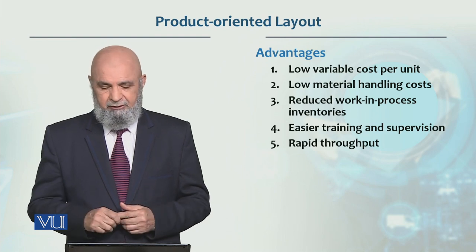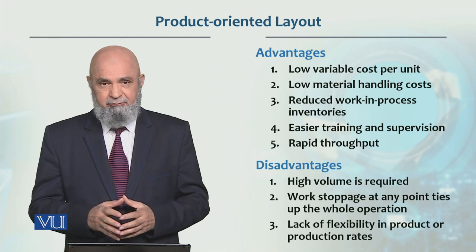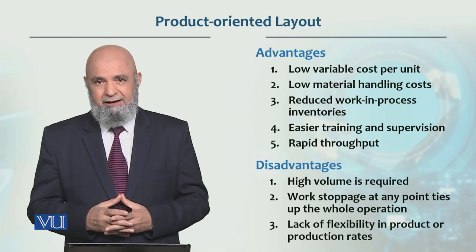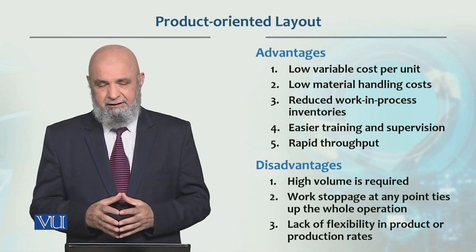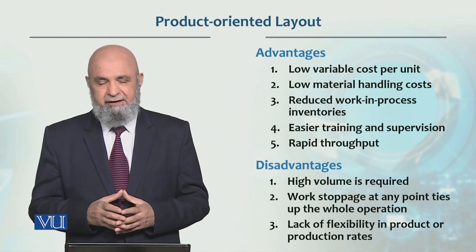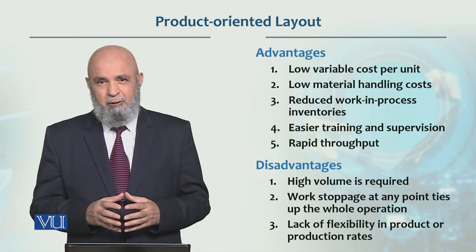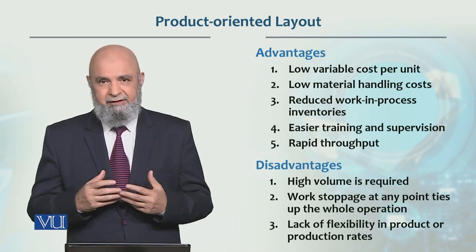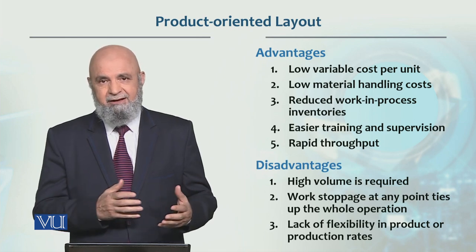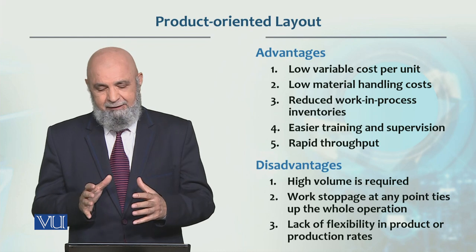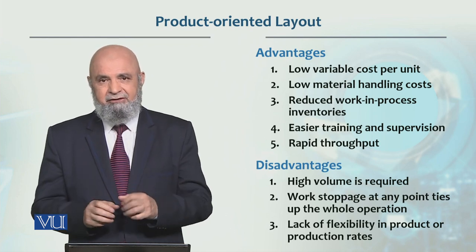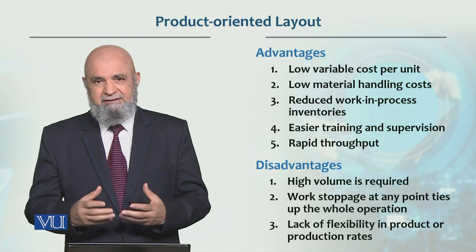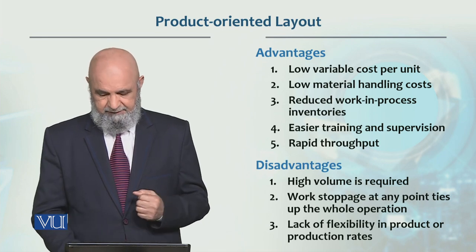The disadvantages are that high volume is required; if the volume is not high, it is not feasible to have this layout. Another major problem is that if work at any one workstation stops, then the whole line is shut down. Unlike a process-oriented layout where production can continue, in the product-oriented layout a stoppage at one station stops the entire line. Additionally, there is no flexibility — you can only produce the same product on this line.